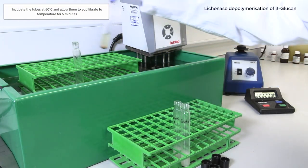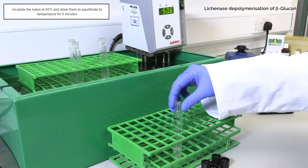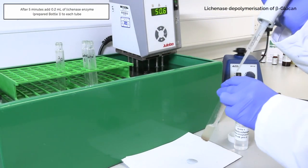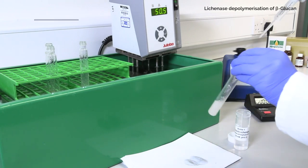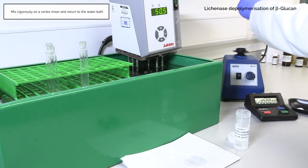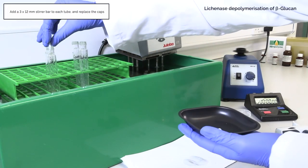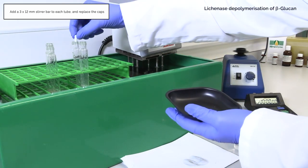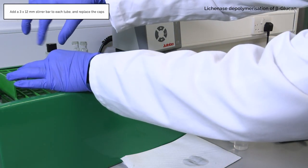Incubate the tubes at 50 degrees Celsius and allow them to equilibrate to temperature for 5 minutes. After 5 minutes add 0.2 milliliters of lichenase enzyme, prepared bottle 1, to each tube. Mix vigorously on a vortex mixer and return to the water bath. Add a 3 by 12 millimeter stirrer bar to each tube and replace the tube.